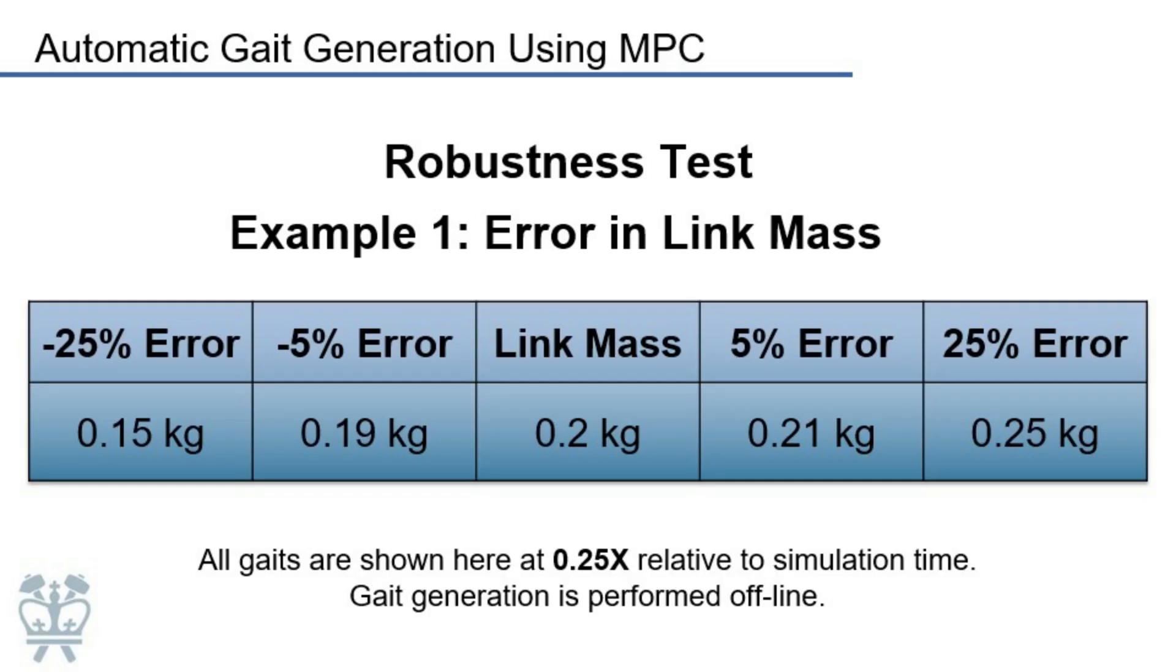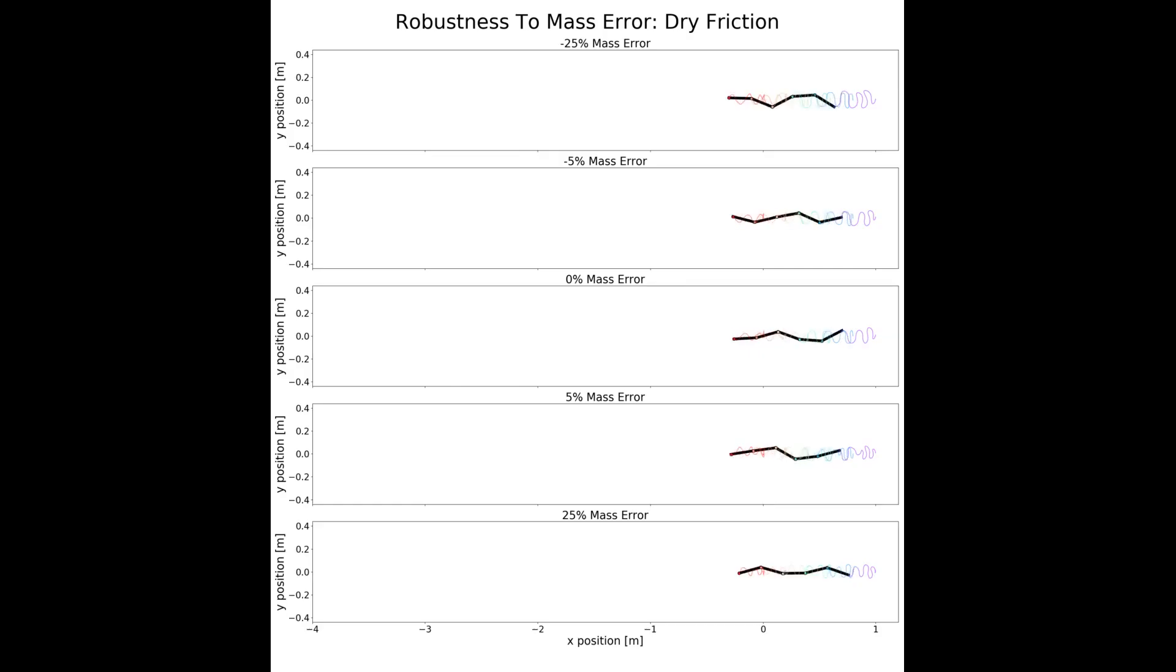In the robustness test, we introduce error into the internal dynamics model that MPC uses in order to simulate an imperfect model in a real environment. Here we add error to the mass of the snake in the internal model used by MPC.